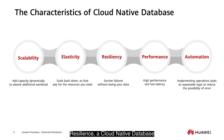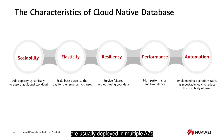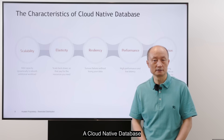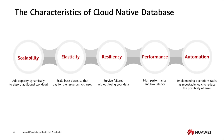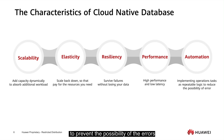Resilience. A cloud-native database must be able to survive system failures without losing any data. A database is usually deployed in multiple availability zones or multiple data centers. A cloud-native database also performs better and offers lower latency, and it can automate repeated tasks to prevent the possibility of errors.